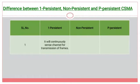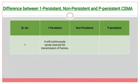Hello everyone. In this video we will see what is the difference between one persistent, non persistent, and p persistent CSMA. In one persistent CSMA, it will continuously sense the channel for transmission of frames. The stations first check whether the channel is busy or idle. If the channel is busy, it will not wait and will sense the channel again, continuously.